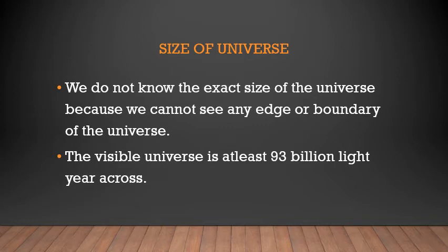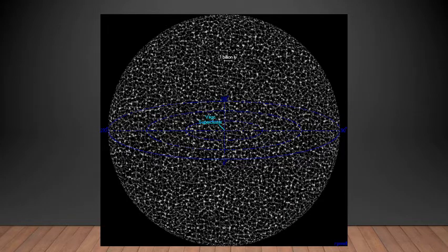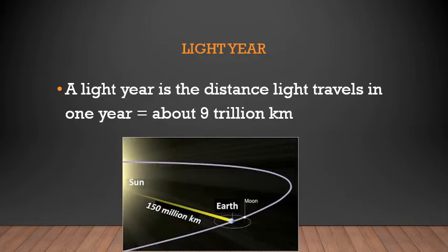In this universe there are many galaxies, many solar systems, and many particles like Earth which we cannot easily observe. One light year is the distance traveled by light in one year, which is equivalent to about nine trillion kilometers. In the picture you can see that the distance between the sun and the Earth is 150 million kilometers. Light years are used to measure the distance between celestial bodies or any distance in space.